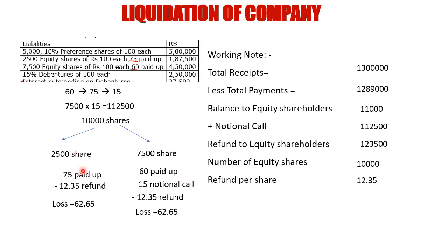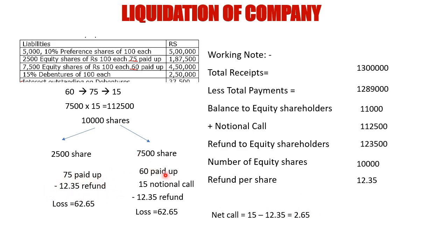For the first category (2,500 shares at 75 paid up): shareholders paid 75, we refund 12.35 — no call needed. For the second category (7,500 shares at 60 paid up): we call 15 rupees (notional call) and refund 12.35. Rather than taking 15 and paying 12.35 separately, we net them: 15 minus 12.35 equals 2.65 net call per share for the second category.